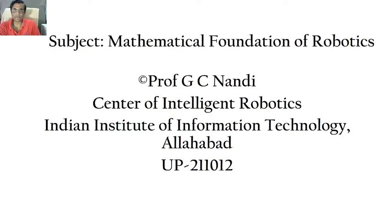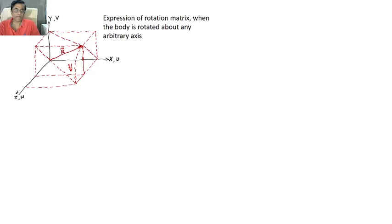Hello, dear. Welcome back. We are again discussing orientation, trying to understand all the intricate details about how a rigid body's orientation can be represented in the form of a matrix. Today, we are going to discuss how the description of orientation of a rigid body can be obtained in the form of a composite rotation matrix when a body undergoes some rotation about an arbitrary axis given by R.